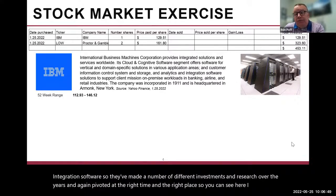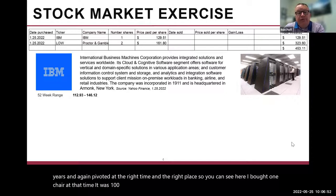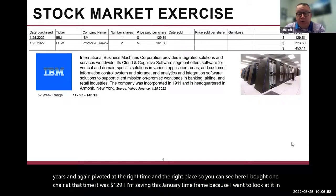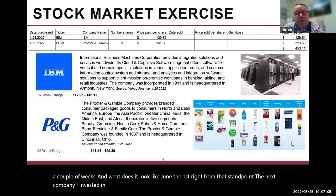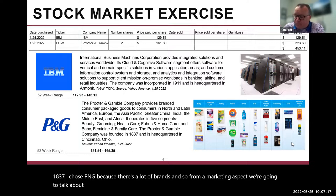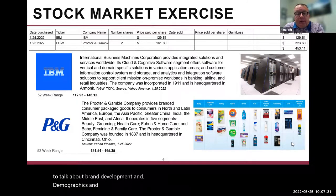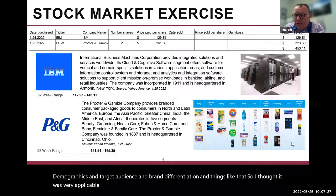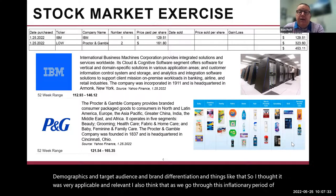I bought one share — at that time it was $129. I'm saving this January timeframe because I want to look at it in a couple of weeks to see what it looks like June 1st. The next company I invested in was P&G — Procter & Gamble — an even older company, founded in 1837. I chose P&G because there are a lot of brands. From a marketing aspect, we're going to talk about brand development, demographics, target audience, and brand differentiation, and I thought it was very applicable.